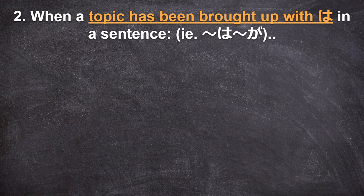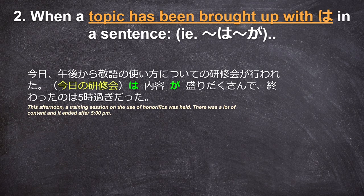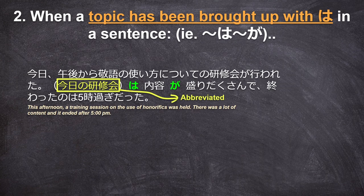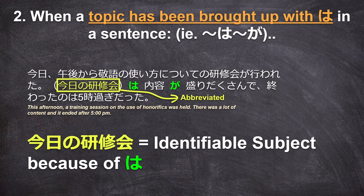The next time we can use が even though the topic has already been mentioned is when a topic has been brought up with は in a sentence — something-something は, then something-something が. Also, just to note: when a topic is evident to both the reader and the writer, it may be shortened or abbreviated. For example: 今日午後から敬語の使い方についての研修会が行われた。今日の研修会は内容が盛りだくさんで終わったのは5時すぎだった — This afternoon a training session on the use of honorifics was held. There was a lot of content and it ended after 5pm. 今日の研修会は was abbreviated because the topic is already evident, but if we leave it in, we see は was used after 研修会, which allows が after 内容 instead of は, even though the topic is already known.